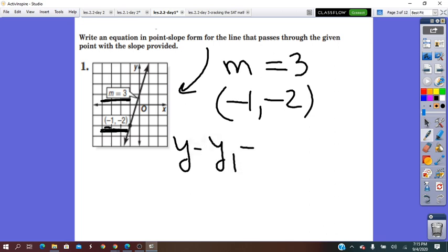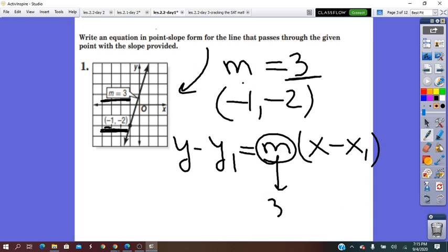y minus y1 equals m times x minus x1. And the slope is 3. I will substitute for m. Here I put 3. This is point x1, y1 coordinates. So, y1 it will be negative 2, and x1 it will be negative 1. I take it left to right and substitute.